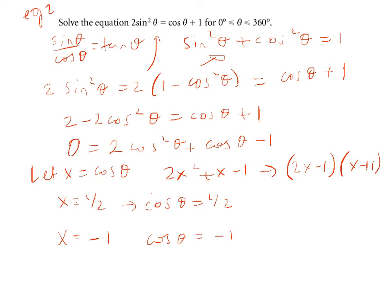For the cos theta equals half, if we then found our principal value using the calculator or if we know the exact values, we know theta equals 60 degrees or 360 take away 60 and give us 300 degrees. For the theta minus 1 we simply know that theta will give us 180 degrees. So we've got three solutions: we've got theta equals 60, 180, or 300 degrees.